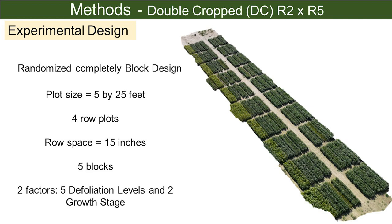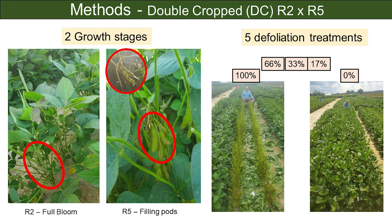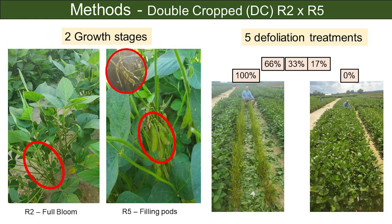We went into those plots and hand-defoliated. We defoliated at R2 and had another treatment defoliated at R5. You can see an example of 100% defoliation and 0% defoliation. This experiment was done in double crop beans. We harvested a known number of plants and counted seeds to determine how many treatments had pods with one seed, two seeds, and so on, plus overall seed weight and total yield.